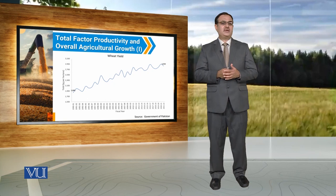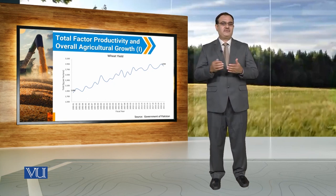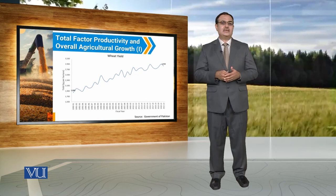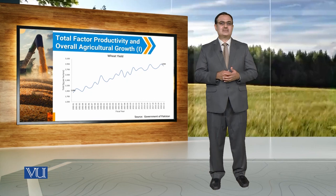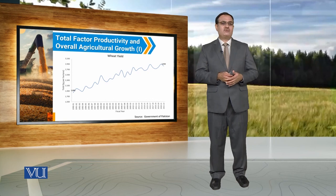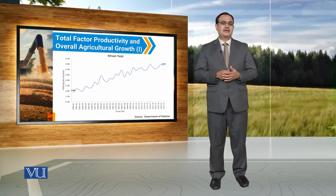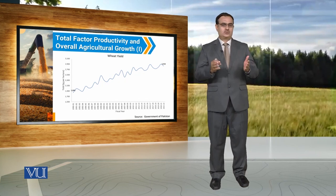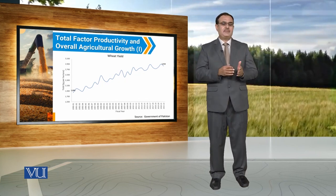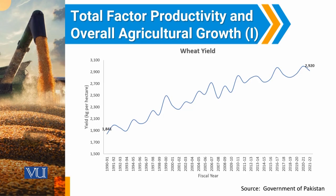I will discuss in a layman form that by looking at the yield of different crops, we can get an idea about the productivity in the agricultural sector. In this diagram, we are taking the fiscal years on the vertical axis and reporting in kg per hectare. During the period of analysis, we can observe that there is an increase in wheat yield over time.